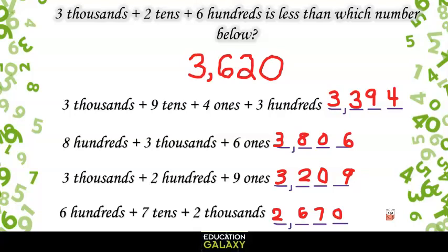Now we can compare these numbers. We are looking for a number that our number, 3,620, is less than. Well, that means we need to find a number greater than ours. If we look at the thousands place, we know 2,000 is not greater than 3,000, so we can eliminate this answer choice. Now let's look at the hundreds. Our number has 6 hundreds, but this number has 8 hundreds. So this must be our answer.